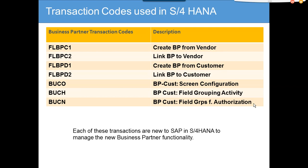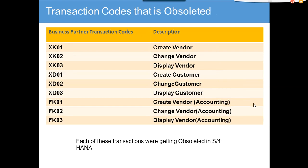Then you have BUCO — customer screen configuration — customer field grouping activity, and field groups with authorization. Each of these transactions is new to SAP in S4 HANA to manage the new business partner functionality. There are also transactions that are now obsolete — they may show up but will redirect you to the BP screen.